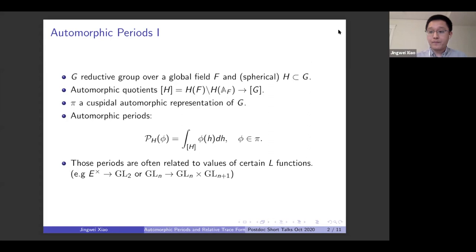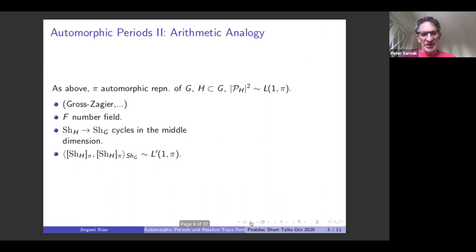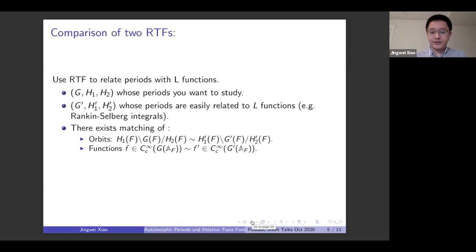To what extent do you recover Ngô's work? I mean, the fundamental lemma. So you have this unitary case with elliptic. Yes, you cover everything in the unitary case. You recover everything in the unitary case. Yes. And what about other groups?